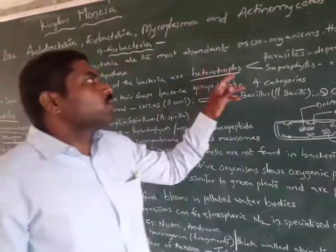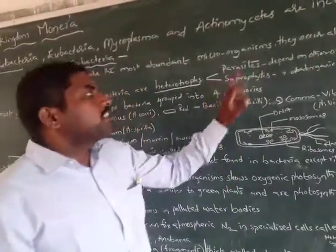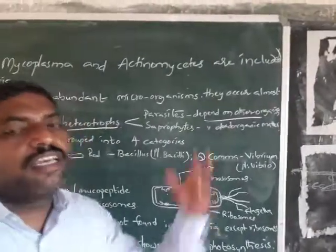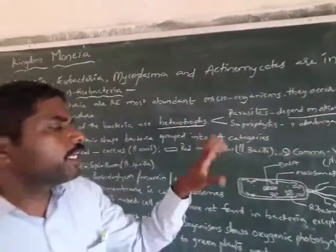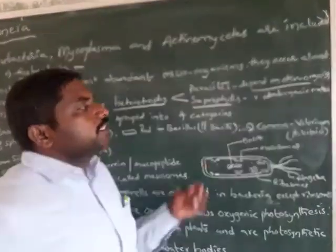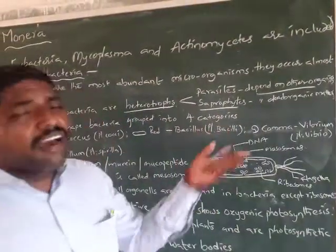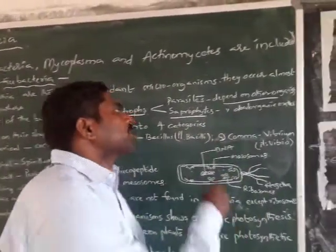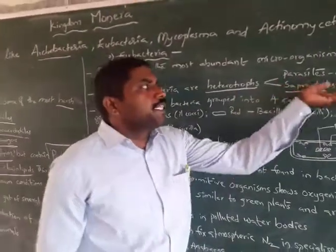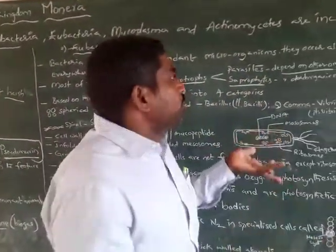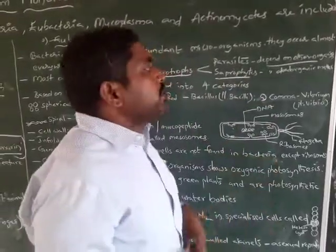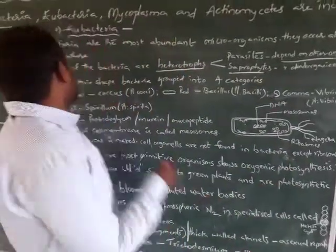Among heterotrophs, some are parasites — depending on other organisms for food and shelter — and some are saprophytes, depending on dead organic matter for their food.